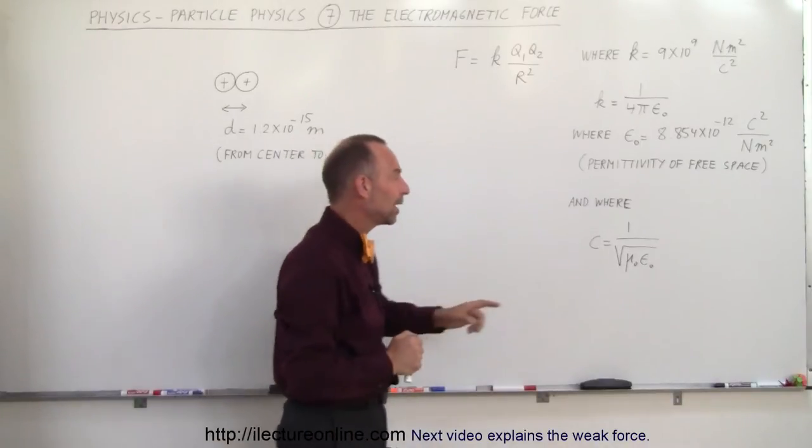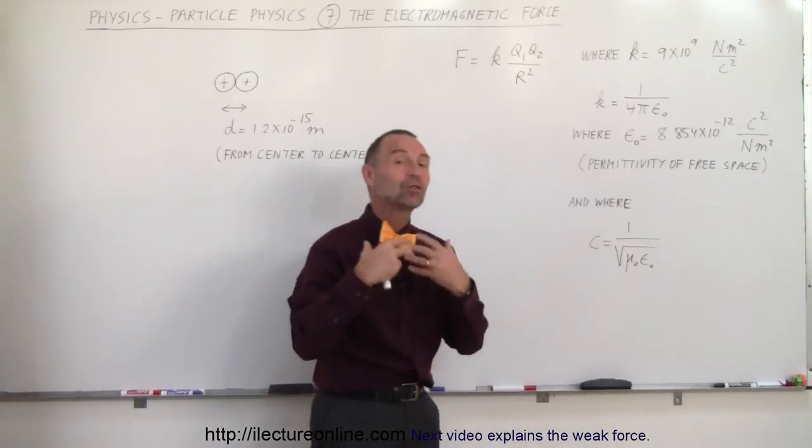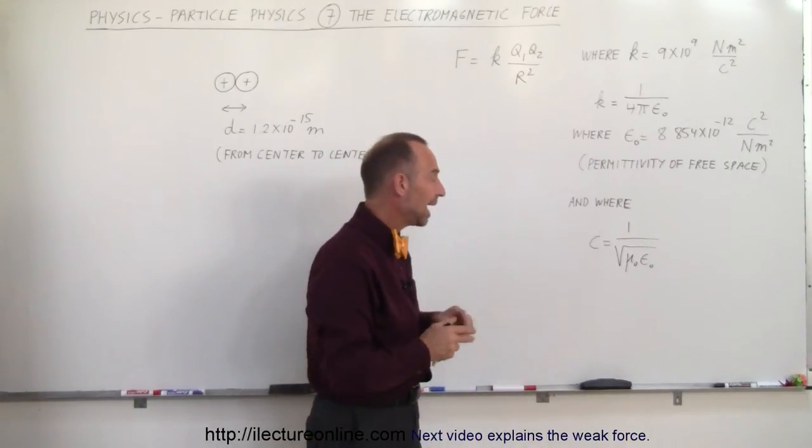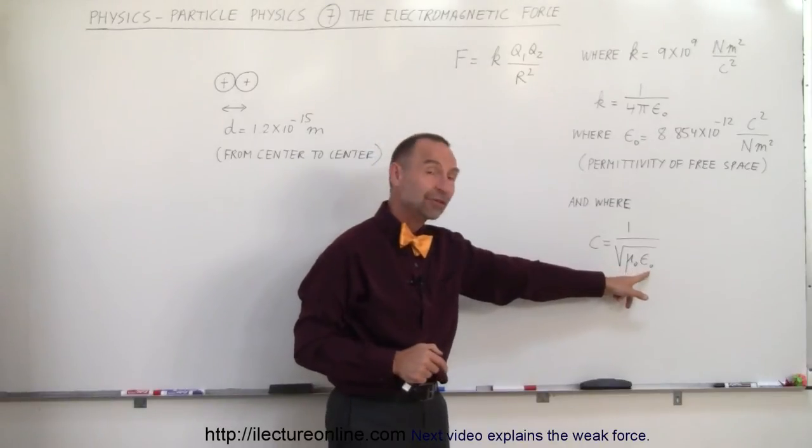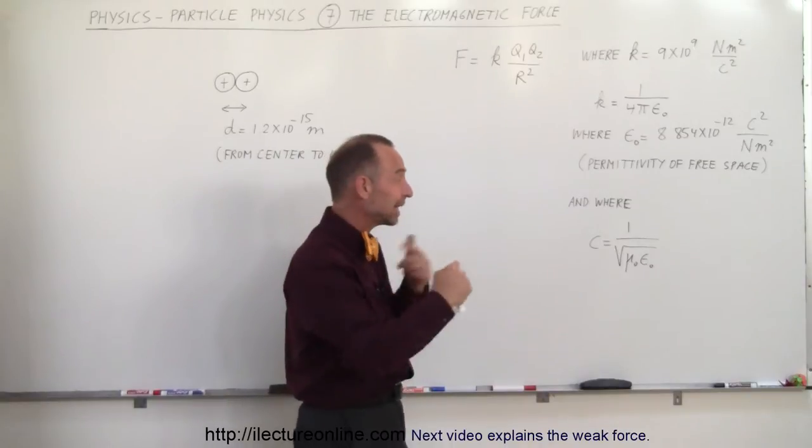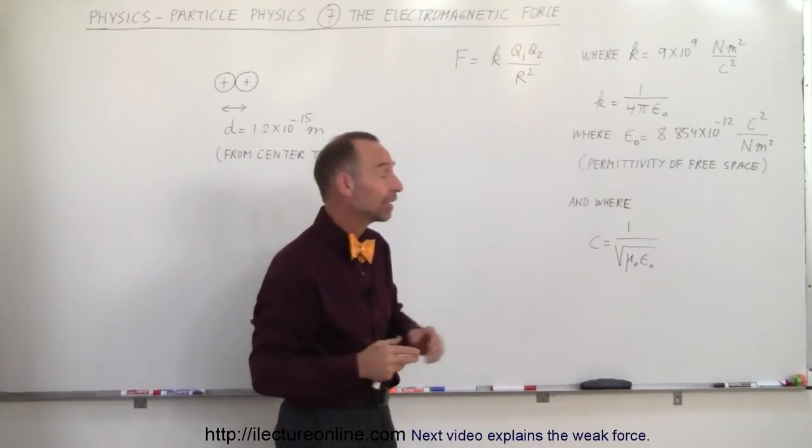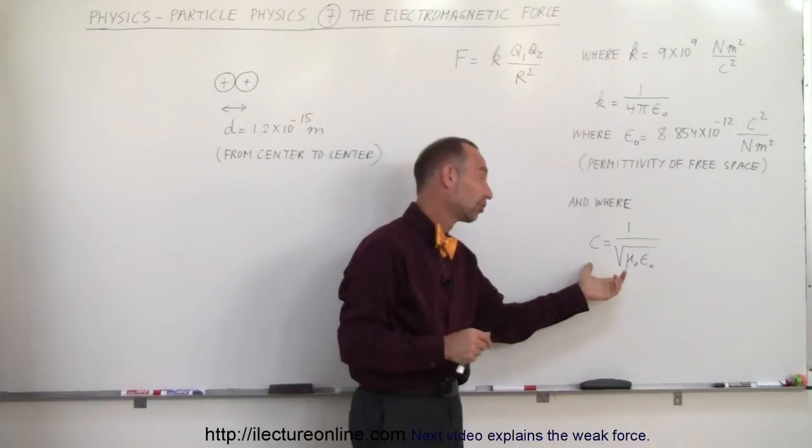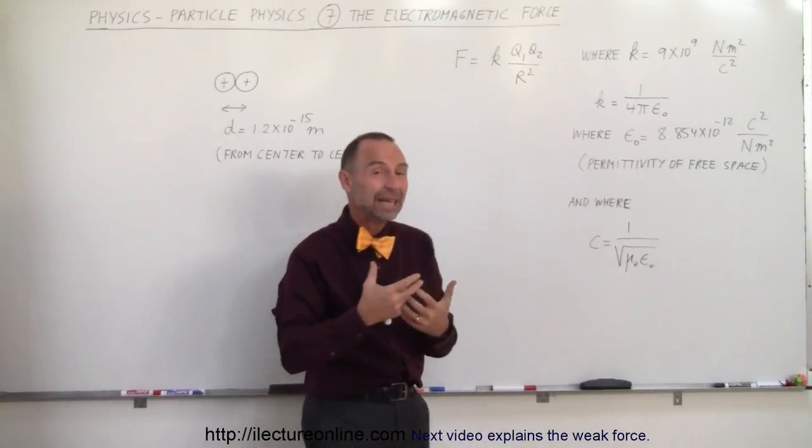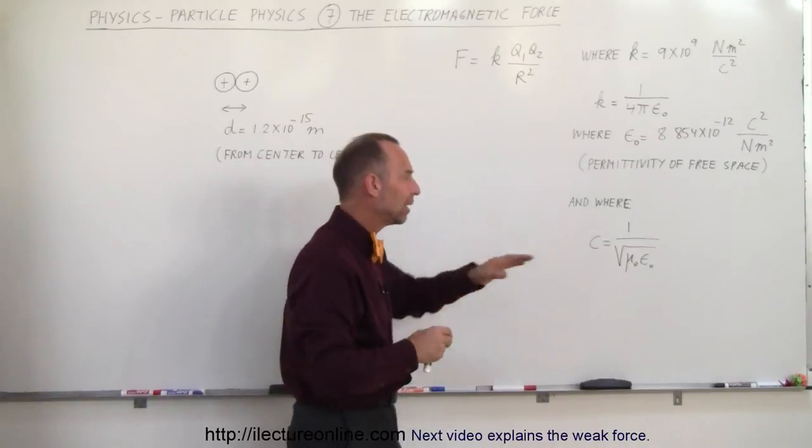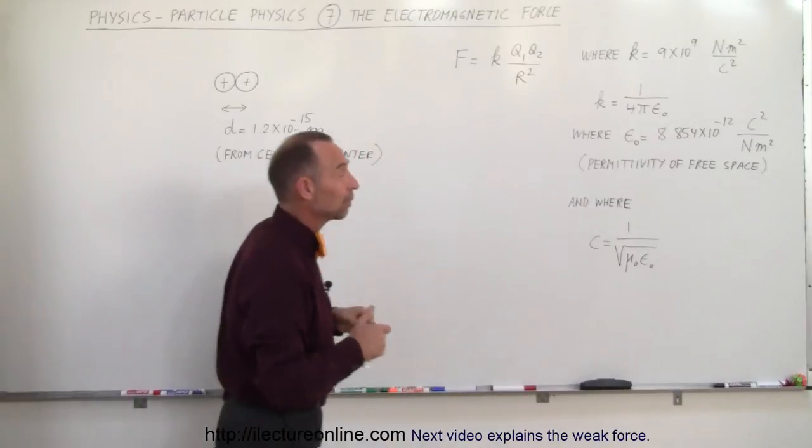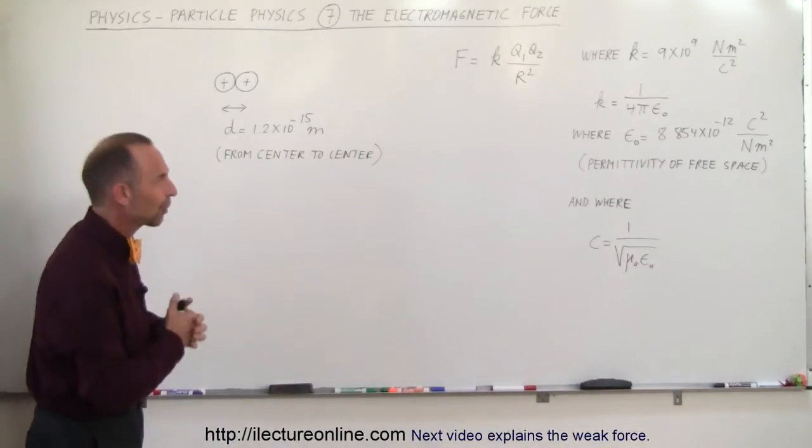What's interesting is that we have the permeability of free space, which governs the magnetic interaction between charges. If we take the product between the permittivity and permeability of free space, take the square root, and then the inverse, we get the speed of light. Maxwell discovered this tremendous discovery - the speed of light is determined by the permittivity and permeability of free space. Of course, that should not be a surprise to us.